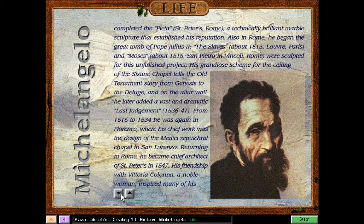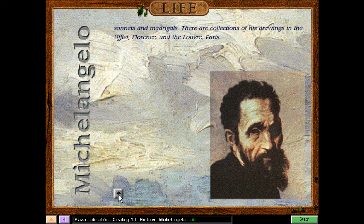Also in Rome, he began the great tomb of Pope Julius II. The Slaves and Moses were sculpted for this unfinished project. His grandiose scheme for the ceiling of the Sistine Chapel tells the Old Testament story from Genesis to the Deluge. And on the altar wall, he later added a vast and dramatic Last Judgment. From 1516 to 1534, he was in Florence where his chief work was the design of the Medici Sepulchral Chapel in San Lorenzo. Returning to Rome, he became chief architect of St. Peter's in 1547. His friendship with Vittoria Colonna, a noble woman, inspired many of his sonnets and madrigals. There are collections of his paintings in the Uffizi, Florence, and the Louvre in Paris.